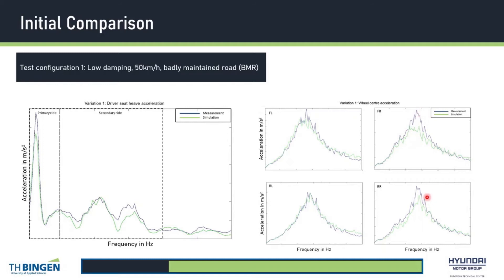The right wheels, however, show relatively high deviation at the 15 Hz region, where the natural frequency of the wheel lies. Looking at the frequency response at the driver's seat, we can conclude that the CarMaker simulation can catch the correct tendency of the vehicle's ride comfort behavior. In the primary ride region, the vehicle body's heave mode is represented correctly, but with lower amplitude at this frequency. From 3 to 13 Hz, the simulation correlates well with the measurement. Around 15 Hz, where the natural frequency of the wheels lies, the simulation shows lack of amplitude, which could be a result of the frequency response of the right wheels as pointed out before.